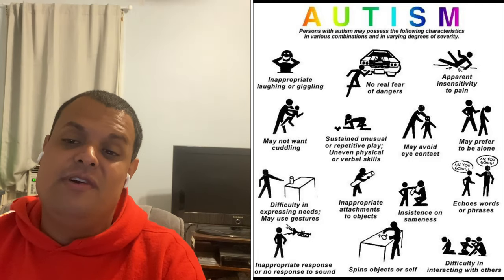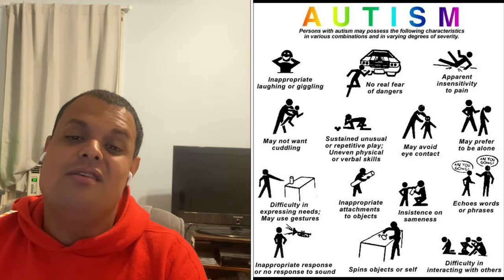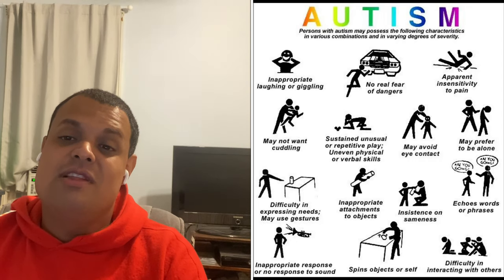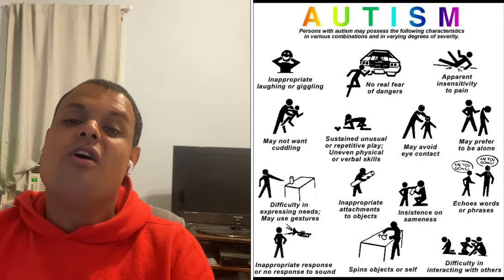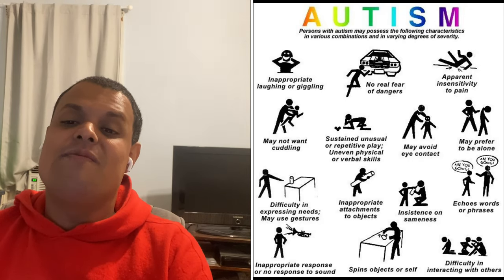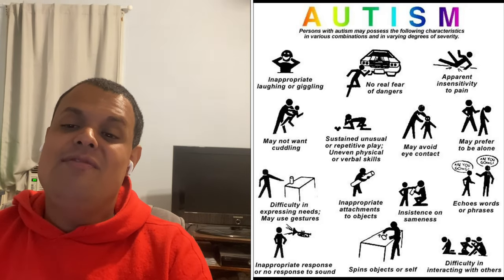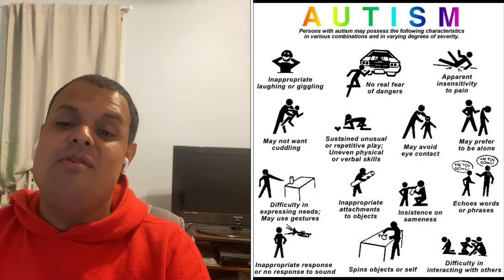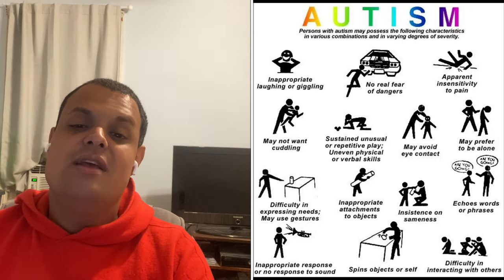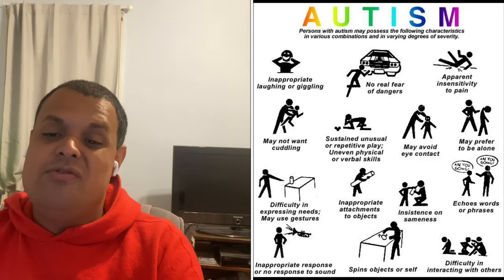Like Arnie, those who are severely autistic don't understand that some of the things they do can be dangerous. For example, in the movie, Arnie would climb trees and jump from them and even made a dangerous climb up the water tower, which at the beginning of the movie he lost one of his shoes and could fall to his death.